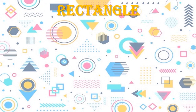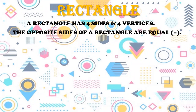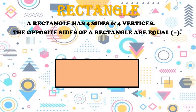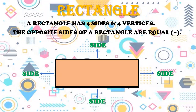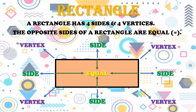Let's see a rectangle first. A rectangle has 4 sides and 4 vertices. The opposite sides of a rectangle are equal. This is a rectangle — it has 4 sides, it has 4 vertices, and its opposite sides are equal.